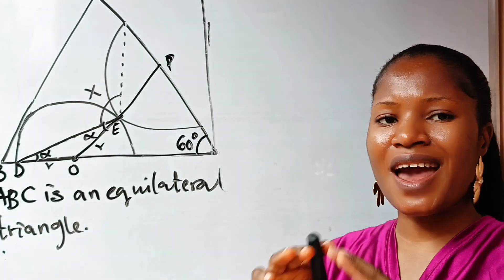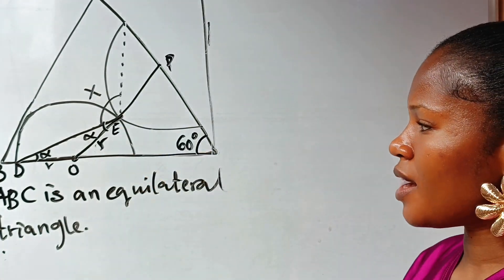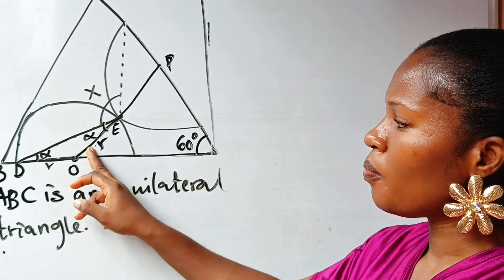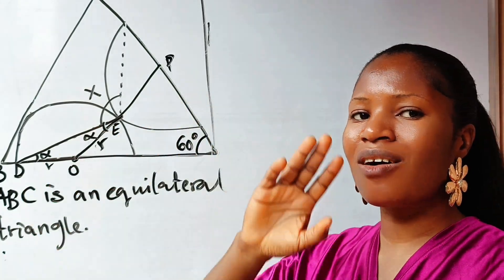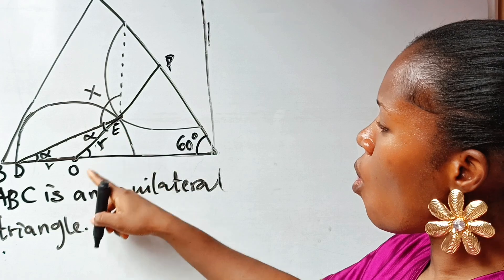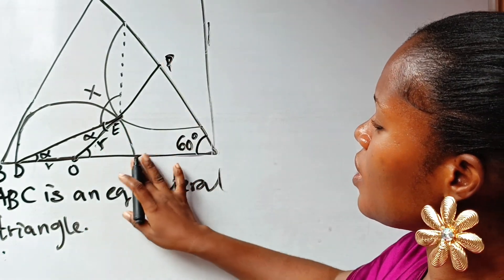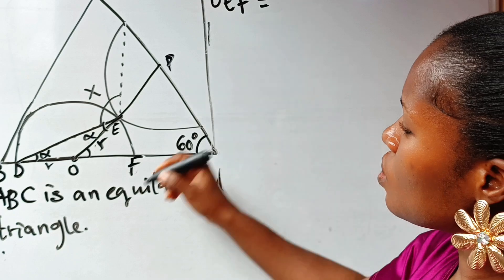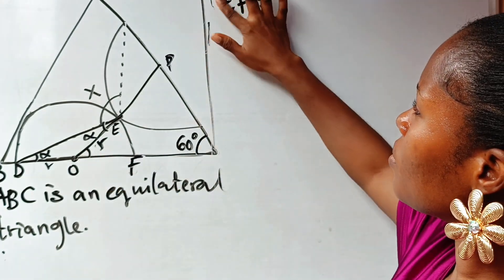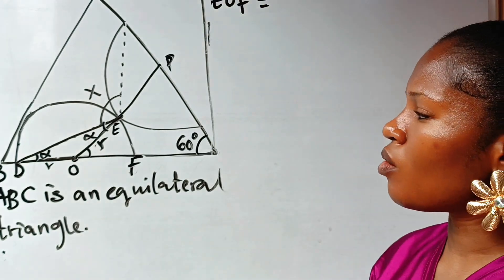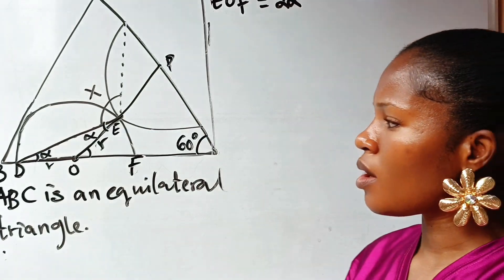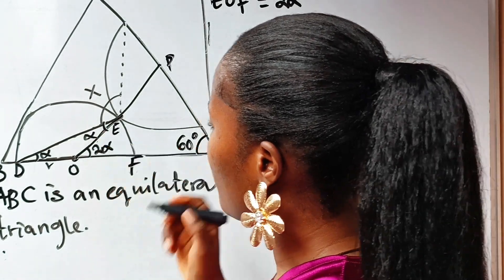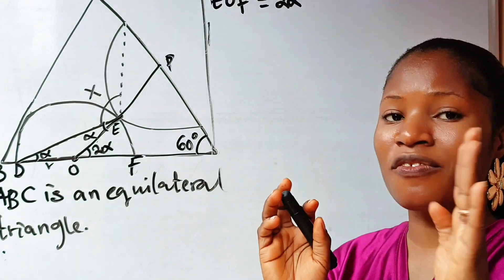Using the external angle theorem — which states that the external angle equals the sum of the two opposite internal angles — if we call this point F, then angle EOF is equal to alpha plus alpha, which gives us two alpha.